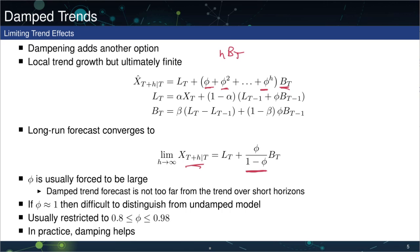The long-run value of the series is phi/(1-phi). So for large H, the damped model has a trend that moderates and can stop growing, rather than continuing to grow indefinitely. To visualize: without damping, you have a straight line going into the future. With damping at, say, phi = 0.9, at first it's very similar, but as you go further out, the trend contribution asymptotes to a maximum value — local growth but not growth forever.